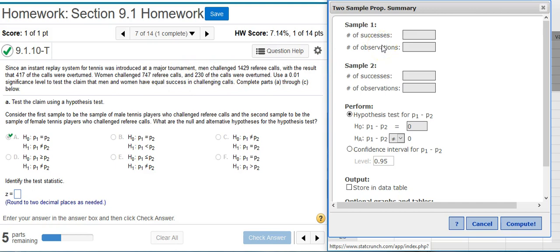Here in the problem statement the men are mentioned first, so we're going to make that sample one. So the number of successes here would be the number of calls that is overturned, which is 417, total number of observations that's the sample size. And I'm going to put in the same information for the women.